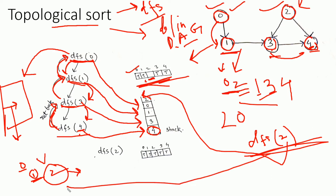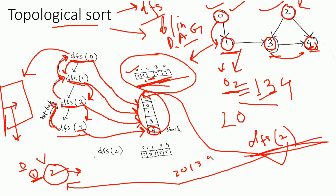The caller of DFS 2 is again the main function. Looking at the visited array, we have already explored all vertices of the graph. So at last we print the stack, and the output will be 2, 0, 1, 3, 4. Matching this output against the graph, vertex 2 and vertex 0 are independent vertices — meaning independent jobs.